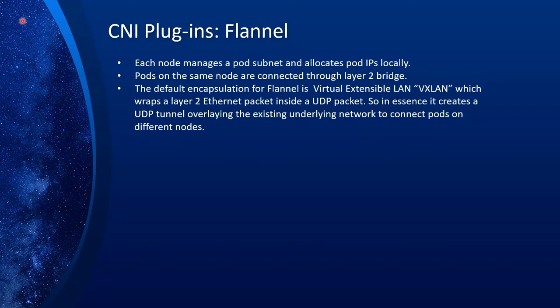When you install Kubernetes, you have to install CNI plugins, and there are a number of them you can select from. Flannel is the oldest and simplest one, and it is appropriate for small to medium-sized Kubernetes clusters where all the nodes are in the same subnet. Each node manages the pod subnet and allocates pod IPs locally. Flannel assigns a block of IPs to each node, and when a pod is created on a particular node, an IP from that block is chosen and assigned to it.